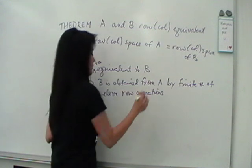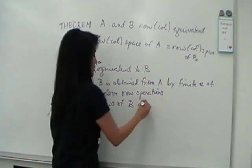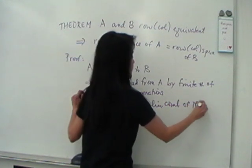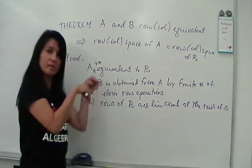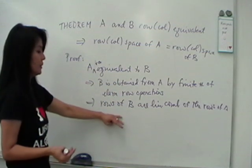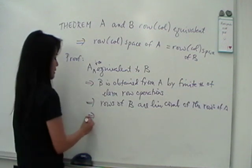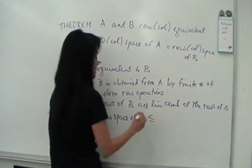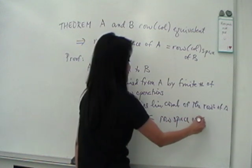So when you do that, really what happens is that the rows of B are linear combinations of the rows of A. Because, imagine your row operations, you say, replace this by twice row one plus whatever, row two. So that's what's happening. So if the rows of B are linear combinations of the rows of A, that means to say the row space of B must be contained in the row space of A.